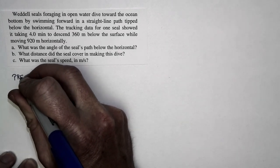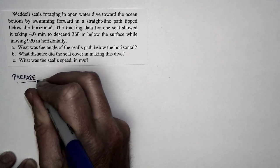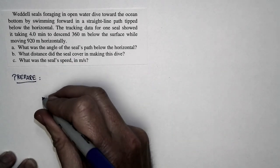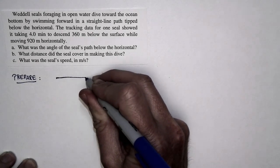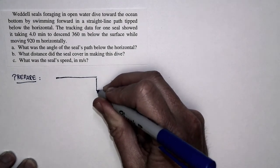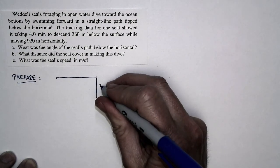To prepare, let's draw a picture of the motion and think about what we're expected to answer. So the seal starts here and it moves 920 meters horizontally. Meanwhile, it dives a distance of 360 meters vertically.